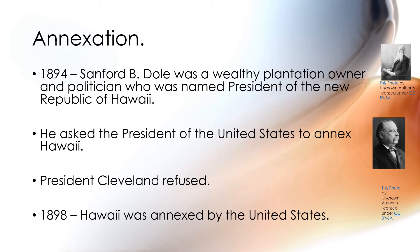In 1894, Sanford B. Dole — the gentleman whose picture you see in the top right corner — was a wealthy plantation owner and politician who was named President of the New Republic of Hawaii. He asked the President of the United States to annex Hawaii. President Grover Cleveland refused. Then in 1898, Hawaii was annexed by the United States.